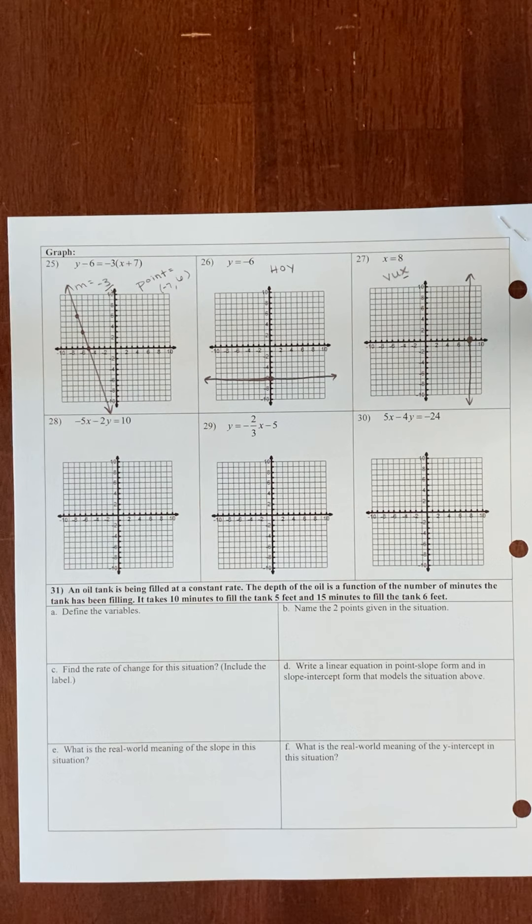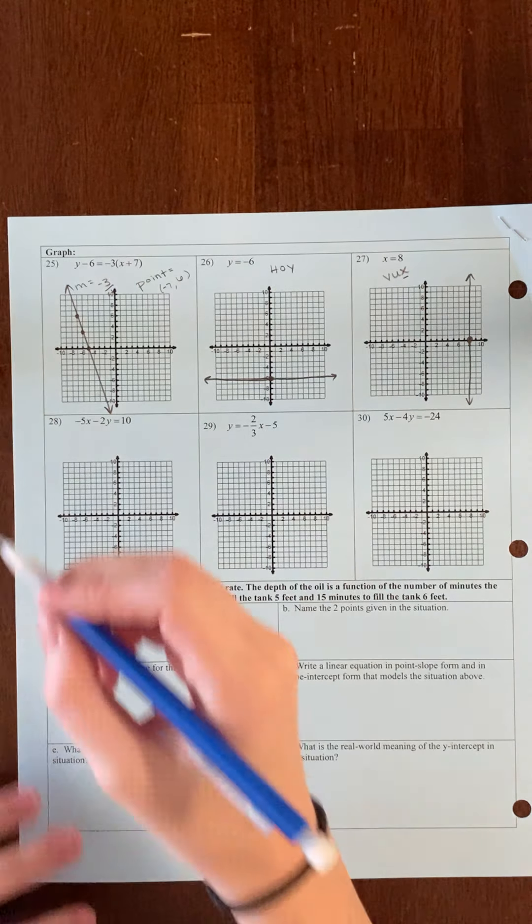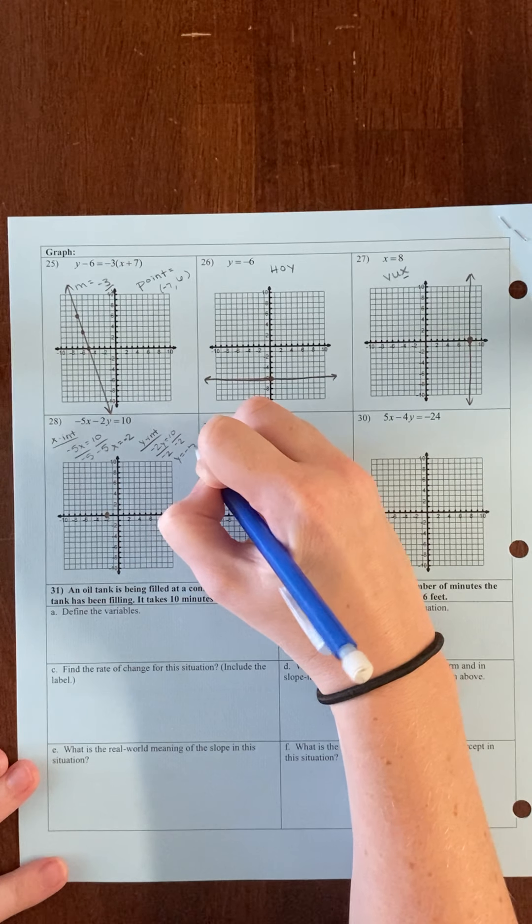Now that I know the slope and the point, I'm going to graph the point first. I'm going to go to the point negative 7 comma 6 — starting at the origin, going back to negative 7 and then up to 6. Now I'm going to do my slope. My slope is negative 3 over 1, which means down 3, right 1. Starting at my point, I go down 3, right 1 and plot a point — down 3, right 1 and plot a point. You want to have at least 3 points, then connect them extending beyond the points and including arrowheads.